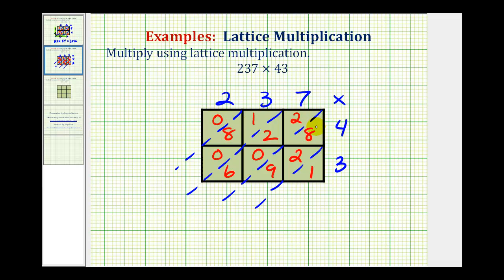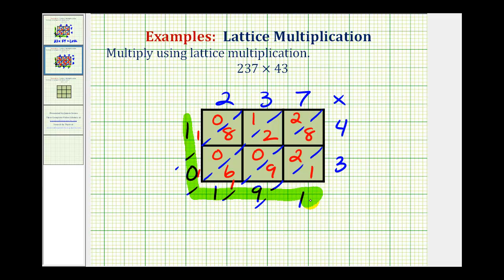Now we add the diagonals from right to left. Here we have one. Here we have eight plus two plus nine — that's 19, so we put a nine here and carry a one. Then we have two plus two plus six — that's ten, plus one is eleven, so we put a one here and carry a one. Here we have one plus eight plus one — that's ten, so we put a zero here and carry a one. And here we just have one. So the digits of our product are one, zero, one, nine, one — which would be ten thousand one hundred ninety-one.